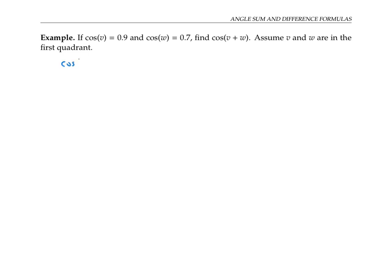Instead, we have to use the angle sum formula for cosine. So that goes cosine of v plus w equals cosine v cosine w minus sine v sine w. Now I already know the cosine of v and the cosine of w, so I could just plug those in. But I have to figure out the sine of v and the sine of w from the given information.